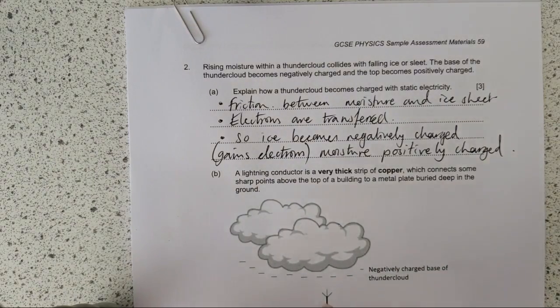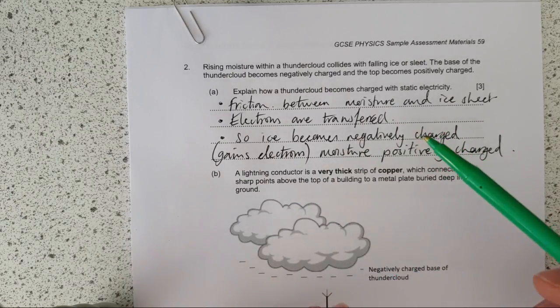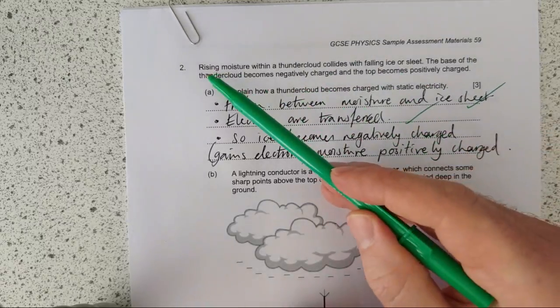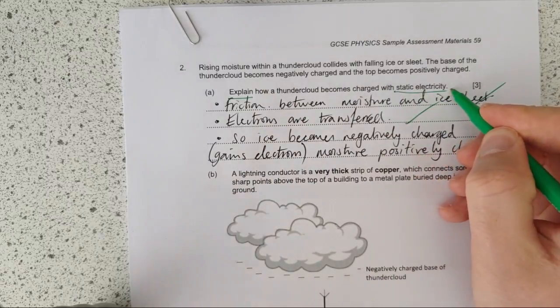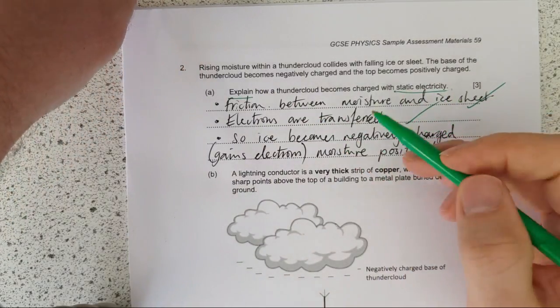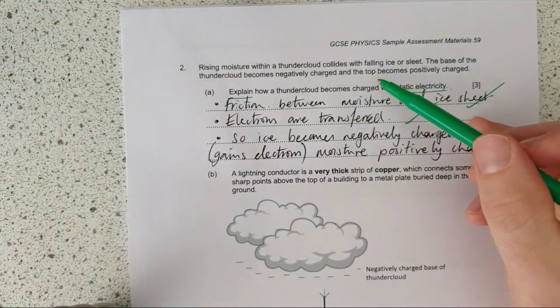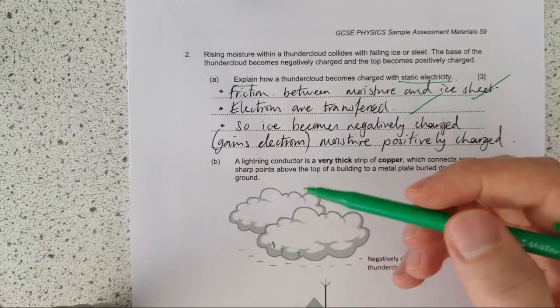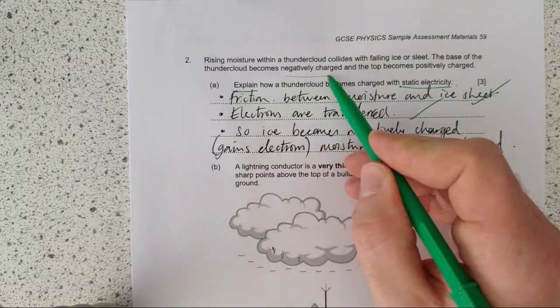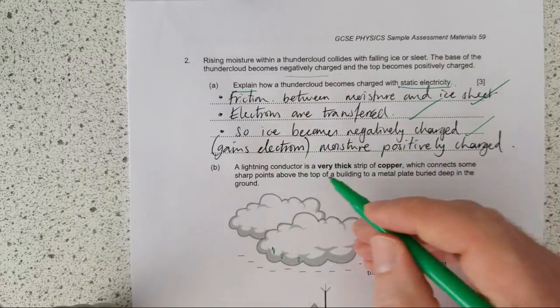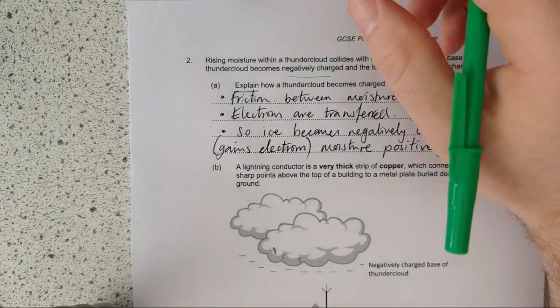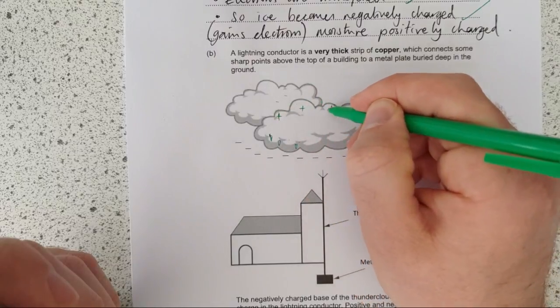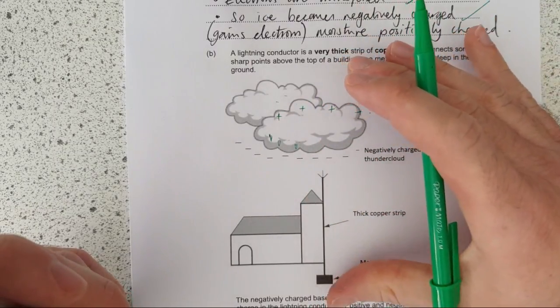Because I read this and I was thinking to yourself, oh I'm pretty sure this is about static electricity and the stuff that I need to know is well alright there's friction and that causes electrons to be transferred. So the standard explanation of static electricity is this friction between things, electrons are transferred. Now there's some detail in there for the last mark that you need to kind of tease out. This is about these clouds and basically these ice sheets that go down and then moisture rises.